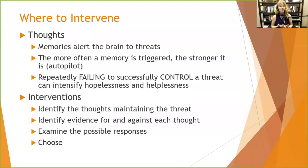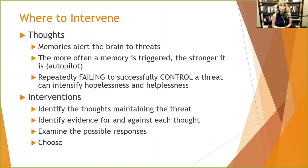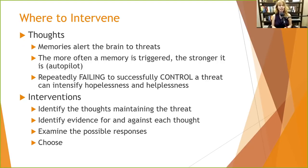Interventions: identify the thoughts maintaining the threat — what is it about this family gathering you anticipate being so miserable? What's the evidence for and against that? Is this based on emotional reasoning or logical reasoning — are we looking at facts or just a gut reaction? Examine possible responses: what could you do to avoid being stressed about it for the next two weeks? Then choose a course of action. I encourage clients to write these things down — write down their possible responses, then write: 'In order to prepare for this, I will do X, and when I start to get stressed about it, I will do Y.' That way, when they start to get stressed, it's already written down and they know what to do.